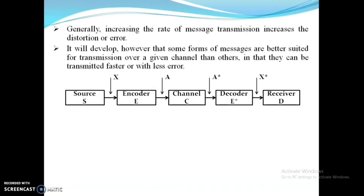The encoder is placed between the source and the channel, and the decoder is placed between the channel and the receiver. X contains a set of messages S1 to SK, each with a different sequence length. With the help of the encoder, the message can be modified as a new message set A, as shown in the diagram. Generally, the encoder converts a message into binary bits that are more suitable for the given channel. Similarly, at the receiver end, the decoder performs the opposite function of the encoder to recover message X star from the distorted set A star.